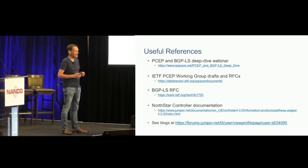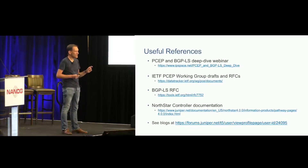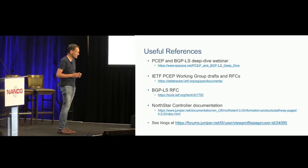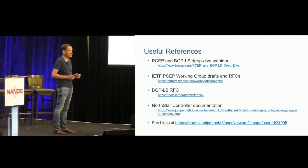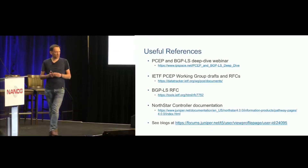That brings me to the end. A few references for learning more: first, a webinar that's a deep dive into PCEP and BGP-LS, including packet dumps of PCEP messages for PCE-initiated LSPs. Second, a link to the PCEP working group, which has ten years of drafts and RFCs — recent ones include PCEP extensions for point-to-multipoint LSPs and PCEP extensions for segment routing. Then the BGP-LS RFC. For specific implementations, you can read about ours called NorthStar. And finally, a few blogs on related topics. Thanks a lot for your attention — I'll be around in the hallways afterwards.